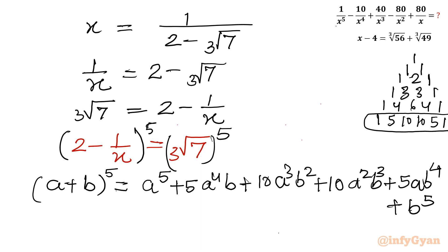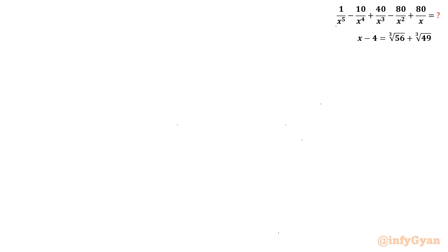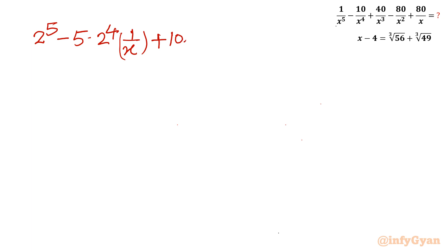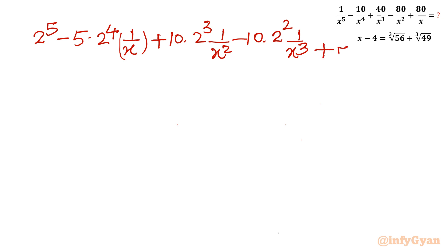Putting a equal to 2 and b equal to minus 1 over x into the expansion, we get: 2 power 5 minus 5 times 2 power 4 times 1 over x, plus 10 times 2 cube times 1 over x square, minus 10 times 2 square times 1 over x cube, plus 5 times 2 times 1 over x power 4, minus 1 over x power 5.